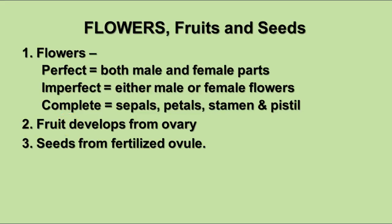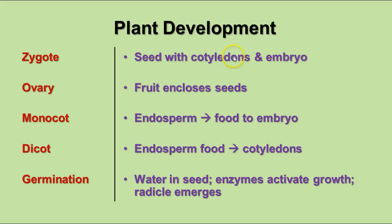The fruit may not look like a juicy apple or pear. It can be a tomato or a cucumber, but it can also be something strange like the winged seeds of maple trees — those wings are the fruit. The seeds develop from the fertilized ovule. The zygote grows into the seed with cotyledons and the embryo. The cotyledons are the seed leaves of the growing seedling, and the ovary is the fruit that encloses the seeds.